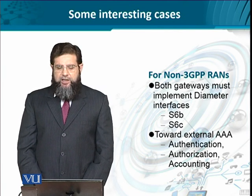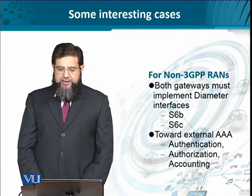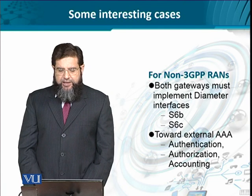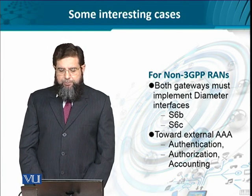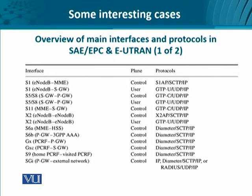For non-3GPP IP CANs, both these gateways have to implement the diameter interface through the S6B interface and the X6C interface, meaning the AAA functionality is implemented externally. The S6B interface is between the packet gateway and the 3GPP AAA server, implemented in the control plane using the diameter protocol over SCTP over IP. The GXC interface is a control plane implementation for the policy and charging rule function server to the serving gateway, also implementing diameter over SCTP over IP.